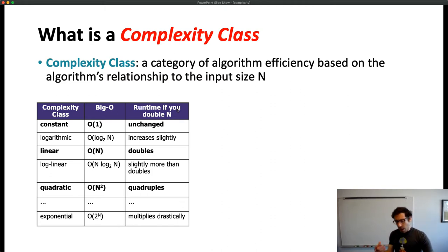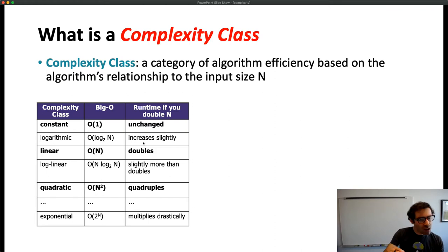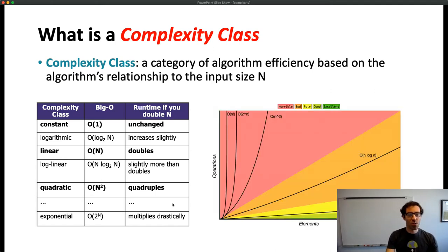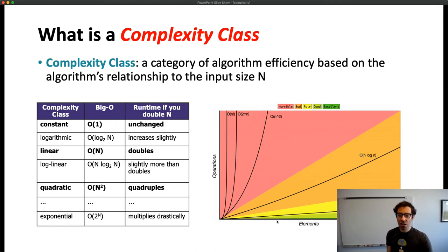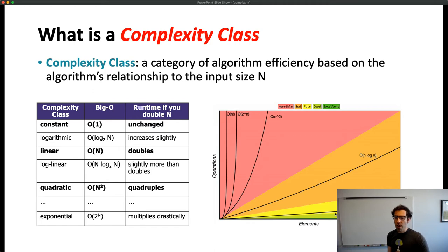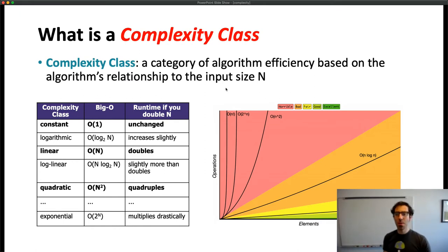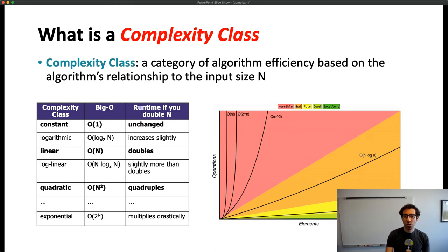If this is describing time, what happens if you double the size of the input? If it's constant, it's unchanged. If it's logarithmic, it only increases slightly. If it's linear, the amount of work doubles. Once we get to n² it quadruples, and by 2^n it multiplies drastically. We can label these trajectories: log n and constant increase very slowly; O(n) is fair; n log n is bad but manageable; and typically anything n² or more makes a problem very difficult to solve for any large input.